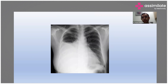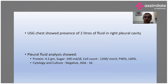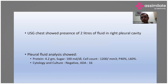We tapped this effusion. Sonography confirmed there were two liters of fluid in the right pleural space. Pleural fluid analysis showed: protein 4.2 grams, sugar 100, cell count 1200. Cytology and culture were negative. ADA was 16 — ADA, adenosine deaminase, is a parameter used for tuberculosis and is predominantly elevated in tuberculosis, being secreted by lymphocytic cells.